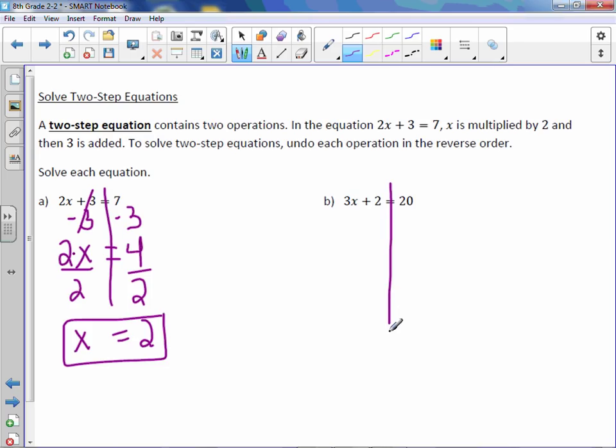Letter B. Plus 2 is the last thing that occurs, so we need to subtract 2 from both sides. We have 3x equals, and 20 minus 2 is 18. To get x by itself, we're going to divide by 3, and we get x equals 6.